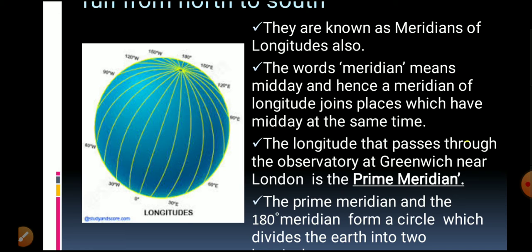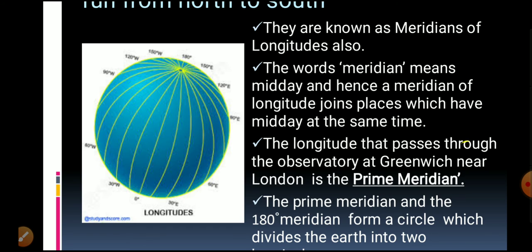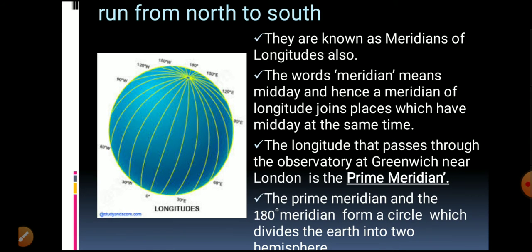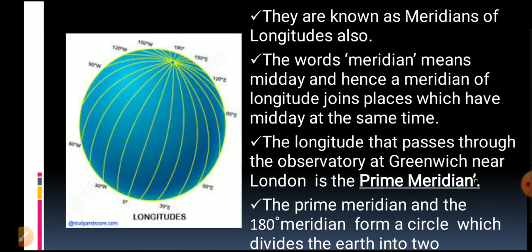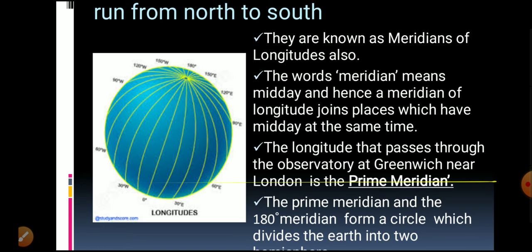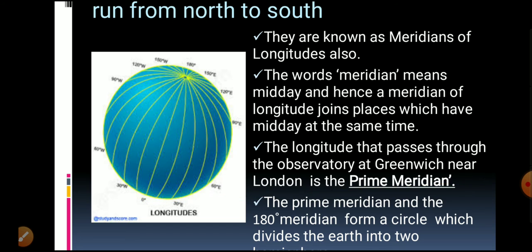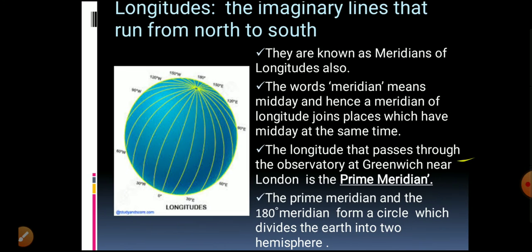The longitude that passes through the observatory at Greenwich, near London, is called the Prime Meridian. The Prime Meridian and the 180-degree meridian together form a circle, which divides the Earth into two hemispheres.